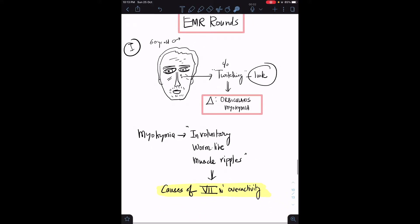I referred the patient to the eye clinic and they diagnosed orbicularis myokymia. Myokymia means involuntary worm-like muscle ripples or contractions. This diagnosis is important because orbicularis myokymia falls under a very important spectrum of conditions causing seventh nerve overactivity.